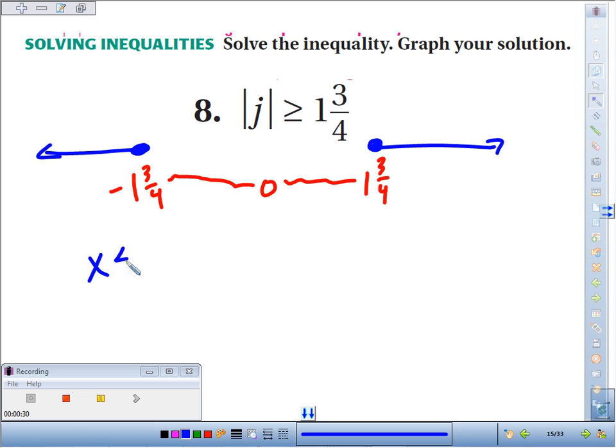It's an or. It could be any number less than or equal to negative 1 and 3 fourths, or it could be any number greater than or equal to positive 1 and 3 fourths.